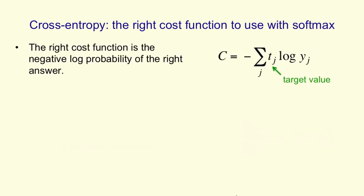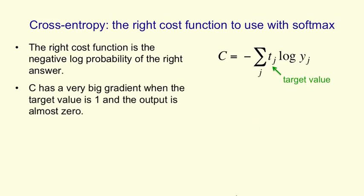That's called the cross entropy cost function. It has a nice property that it has a very big gradient when the target value is 1 and the output is almost 0.